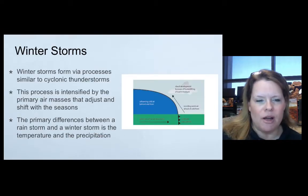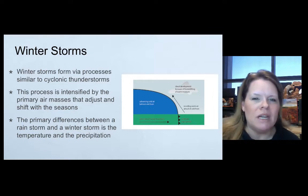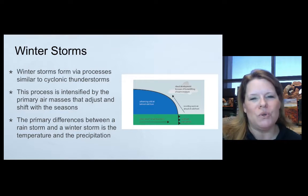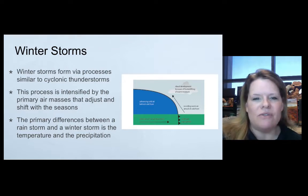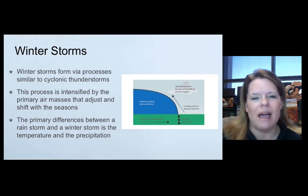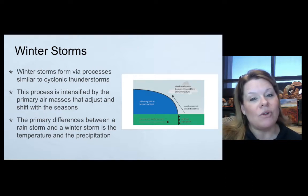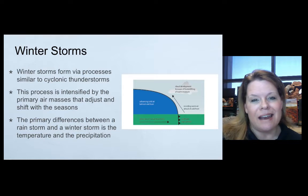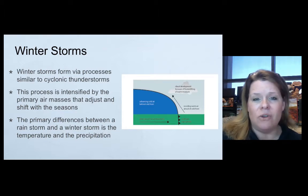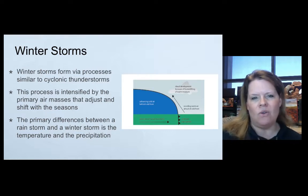Winter storms form via processes similar to thunderstorms — similar to the formation of thunderstorms and the mesocyclones that form there. The process is intensified by the primary air masses that adjust and shift with the seasons. The primary difference between a rainstorm and a winter storm is the temperature and the type of precipitation. Thunderstorms can also produce frozen precipitation like hail, but a winter storm is different because of how the precipitation is impacted.